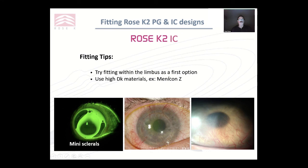Some fitting tips: I always like to try fitting within the limbus as the first option, and I use the highest Dk materials I can. This scenario — neovascularisation from sealed-off semi-scleral designs — is something we do not want to see. These vessels can appear very quickly, which is exactly what we don't want. So when fitting grafts, I always like to try a corneal lens first. That's not always successful, but I would much rather use a corneal lens like XL rather than a full scleral, which tends to seal off the cornea much more.